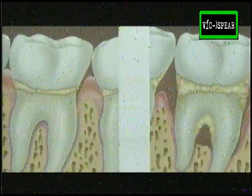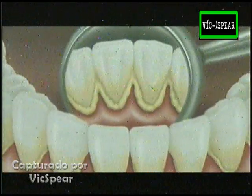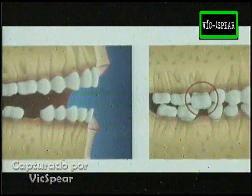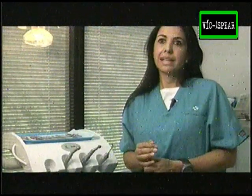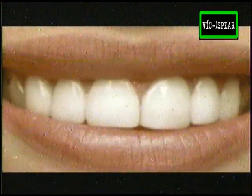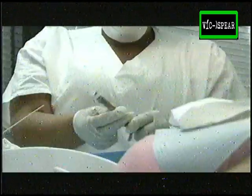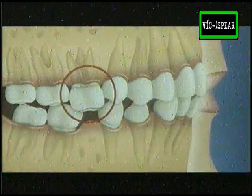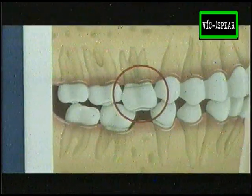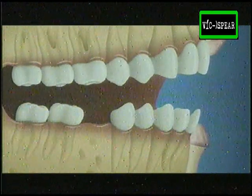Mientras más tiempo pasa, mayor es la separación y más profunda es la brecha hasta que llega al hueso, y cuando llega al hueso se empieza a perder el soporte del tejido que soporta el diente, produciendo con el tiempo la movilidad del diente y en un futuro su pérdida. Desgraciadamente la enfermedad periodontal no es dolorosa y tiene signos que pasan desapercibidos: sangramiento, inflamación, enrojecimiento de las encías. Cuando el paciente siente que se le mueve un diente, ya ha perdido el 70% del soporte y lo que el tejido perdió no se recupera.